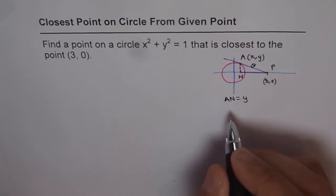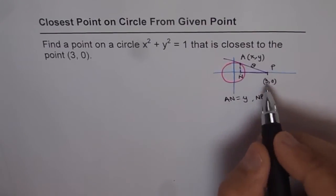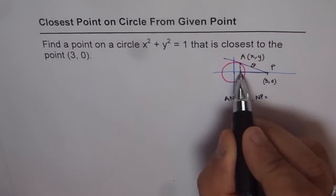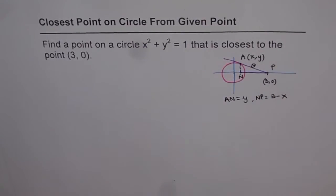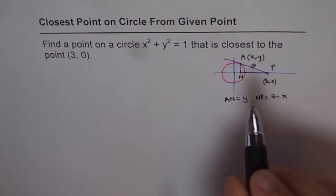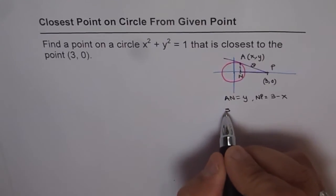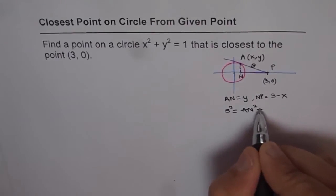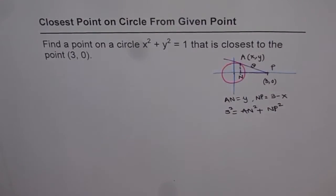And AP is the hypotenuse. And what is NP equals to? NP is equals to distance from here to here. We know from 0 to here it is 3 and from 0 to this place it is x. So it is basically 3 minus x. And now we have a relation here. Since that is the hypotenuse, S square equals to AN square plus NP square.